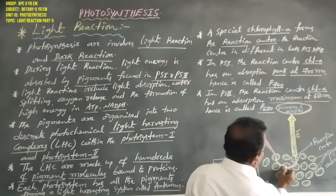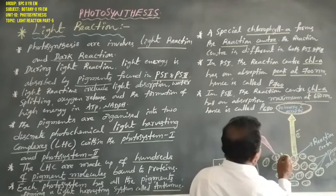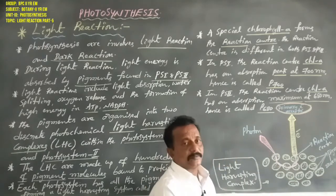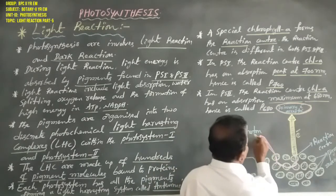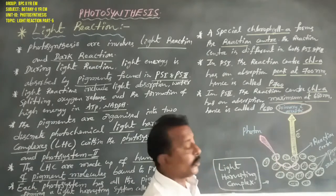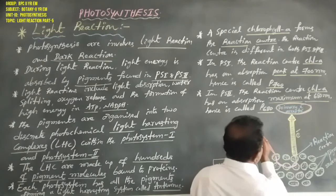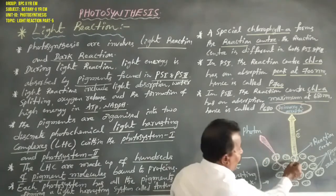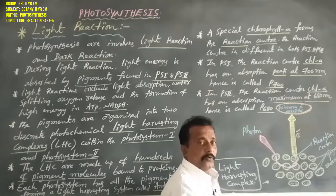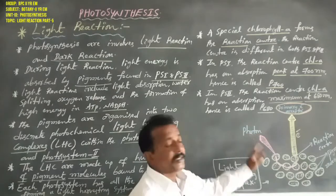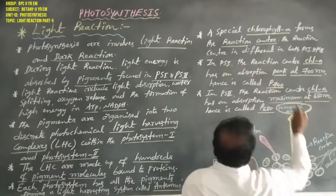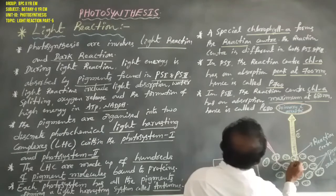Chlorophyll A forms the reaction center, where light energy is converted to chemical energy. The light energy is also known as a photon. Chlorophyll A is easily attached to light energy, and this light energy — the photon — is converted to chemical energy at the chlorophyll A reaction center.